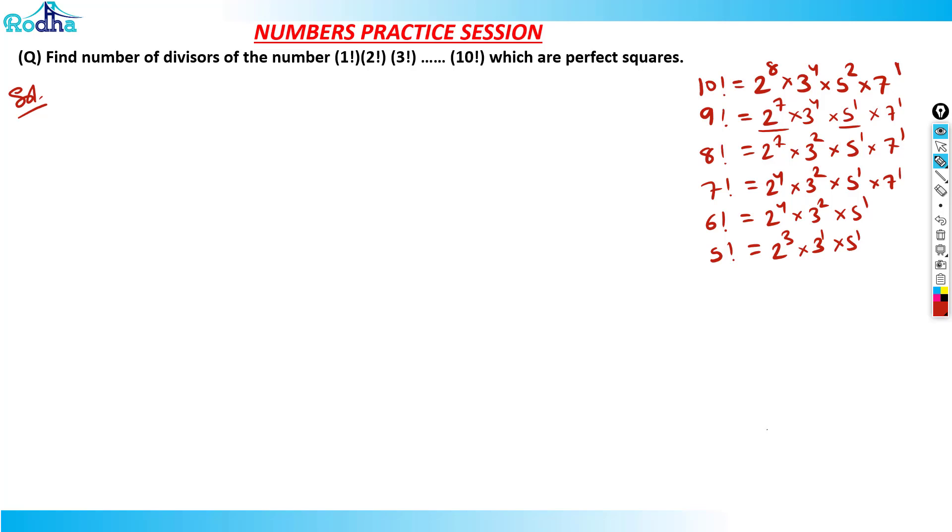Now if you see this here. So basically what is 4 factorial? It's only 24, right. You can do it mentally, you know. 2 cubed into 3 raised to 1. 3 factorial is what? Again 2 into 3. What is 2 factorial? 1 into 2. Correct, like that.